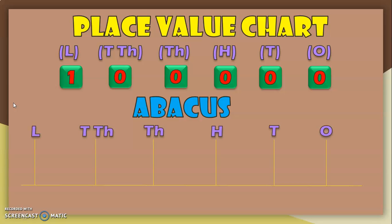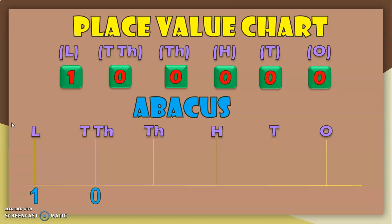Let us see how to represent this 6-digit number on an abacus. For a 6-digit number we need 6 spikes: the 1's spike, 10's spike, 100's spike, 1,000's spike, 10,000's spike, and the new lakhs spike. Since we have a 1 in the lakhs place, we put 1 in the lakhs spike, followed by 0 in the 10,000's spike, 0 in the 1,000's spike, 0 in the 100's spike, 0 in the 10's spike, and 0 in the 1's spike. We represent the lakhs digit with 1 bead; the five zeros have no bead representation. This is how you represent 1 lakh on an abacus.